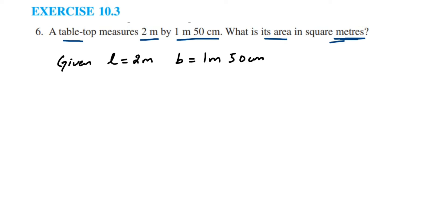Before we find out the area of the rectangle or the table-top, we're going to convert everything into meters. Now length is already in meters, we don't have to convert. But breadth is 1 meter 50 centimeter, so we have to convert this 50 centimeter into meters. 1 meter 50 centimeter is nothing but 1 meter plus 50 centimeter, so I'm going to convert only the 50 centimeter.